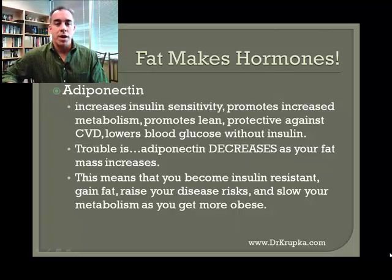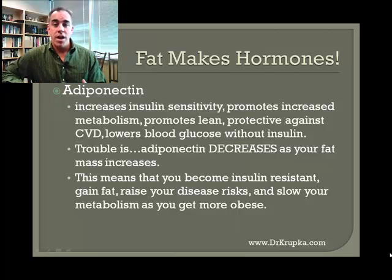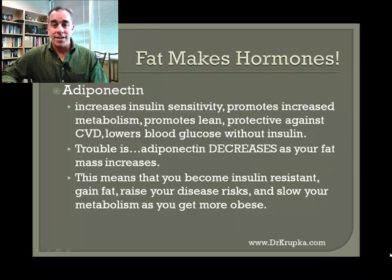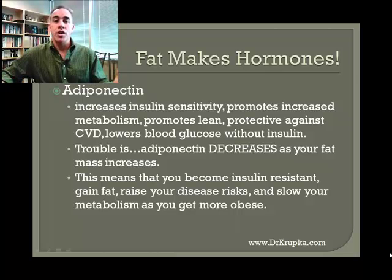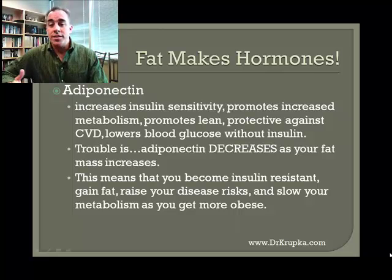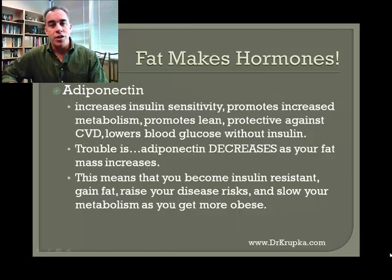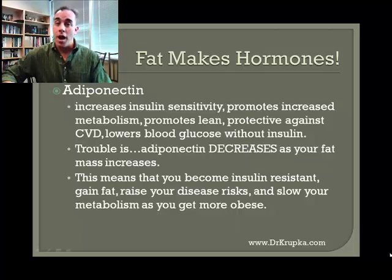Adiponectin increases your metabolic rate, promotes lean muscle mass, and is protective against cardiovascular disease. It also lowers your blood sugar without using insulin — all wonderful things. But the trouble is adiponectin production decreases as your fat mass increases. So over time, as you put on more fat mass, you become more insulin resistant, you gain fat, you raise your disease risks, and you slow your metabolism.